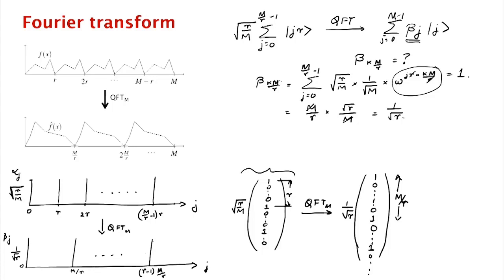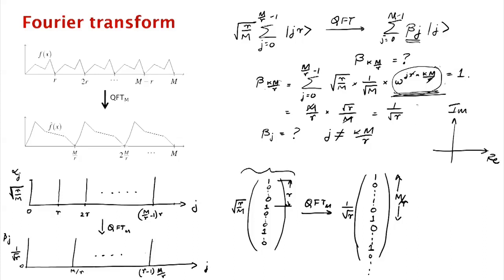If you wanted to, you could also compute beta_j explicitly for j not a multiple of m/r. You'd write out the expression as before, but now the phase no longer cancels. Instead, the phase keeps precessing and is symmetrically distributed around the unit circle, so when you add up all the vectors, you get zero — completely destructive interference. Therefore beta_j = 0 whenever j is not a multiple of m/r.